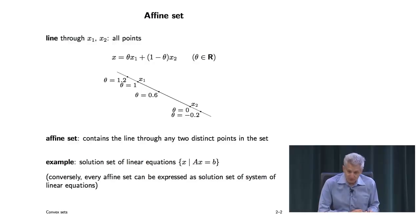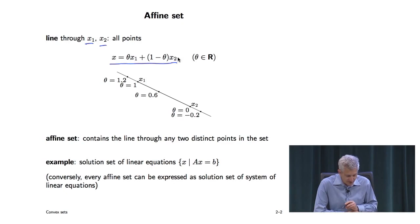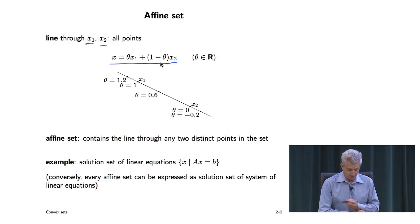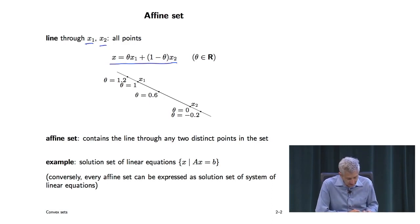We'll start with the idea of an affine set. We have two points in R^n, x1 and x2. We form another point by taking a number theta and forming the vector theta*x1 plus (1 minus theta)*x2. It's a linear combination of x1 and x2, but a very specific one — the two coefficients add up to 1.